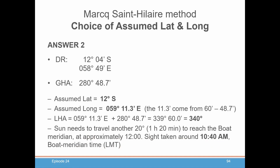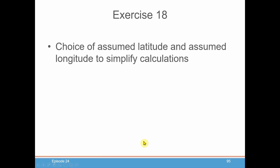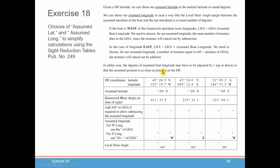That's basically the concept of assumed position and why it's important, especially when you're using sight reduction tables 249. In your exercise book, you're going to find exercise 18. The directions should be fairly self-explanatory. You're going to be given your coordinates, pick an assumed latitude, and the Greenwich hour angle is given for each position. You can put 360 here if you need to, to allow subtracting for your assumed longitude if you're doing west longitude. Create your assumed longitude and calculate the local hour angle — subtracting if you're west, adding if you're east. For east, remember the minutes have to be 60 minus the minutes of the GHA.